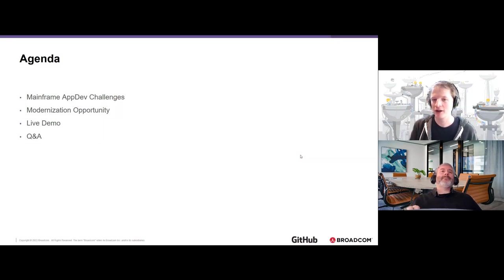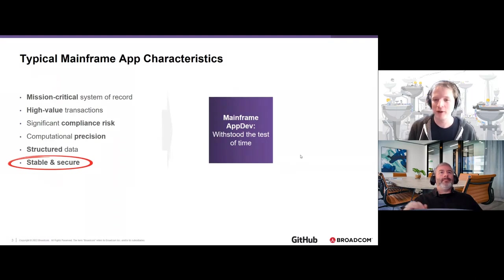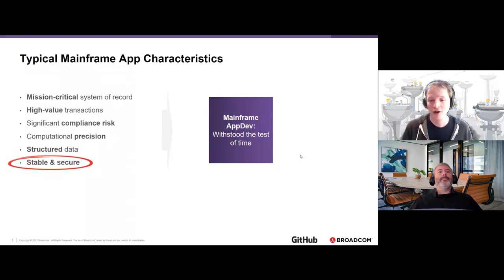If you're coming from a distributed background you might be wondering why we're talking about mainframe. For folks from a mainframe background this is probably old news, but when we're talking about mainframe apps we're talking about the mission-critical systems of record for organizations with high-value, high-volume transactions. For many of these organizations these workflows have a significant compliance component, and any deviation presents a significant risk toward achieving that compliance.